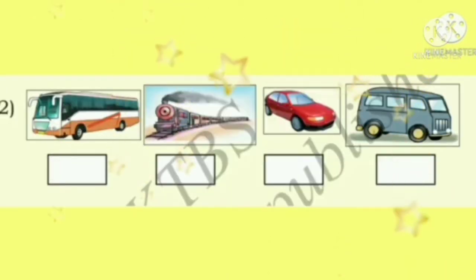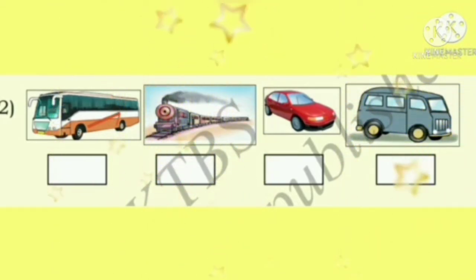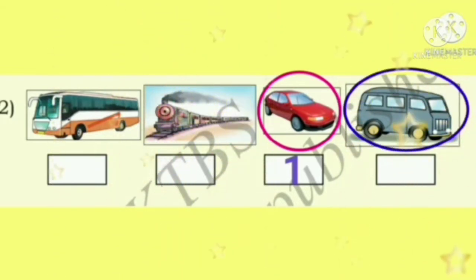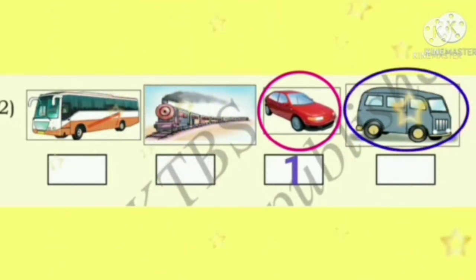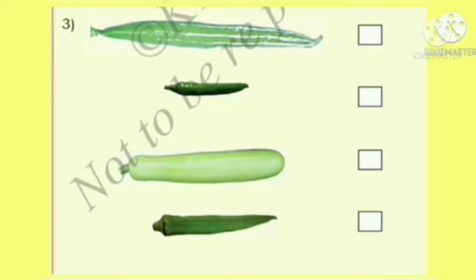Children, look at these pictures. Here we have bus, train, car, and van. Which one is shortest? Car is shortest, so let us write one. Van is longer than car and shorter than bus, so let us give number two for van and number three for bus. Among these four vehicles, train is the longest, so let us give number four to train.